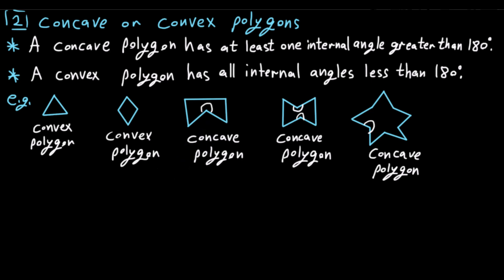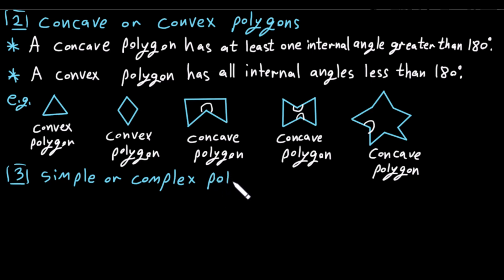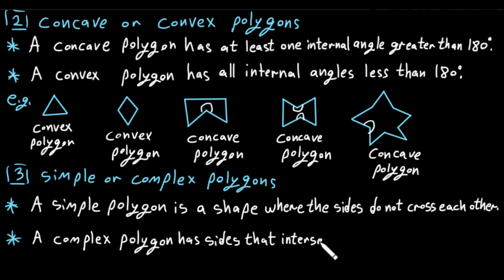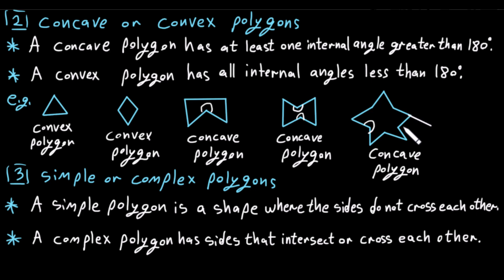Now let's go to the third type of polygon classification: simple or complex polygons. A simple polygon is a shape where the sides do not cross each other. For example, if we extend sides that don't cross, those shapes are simple. All examples where no sides cross each other are simple polygons.